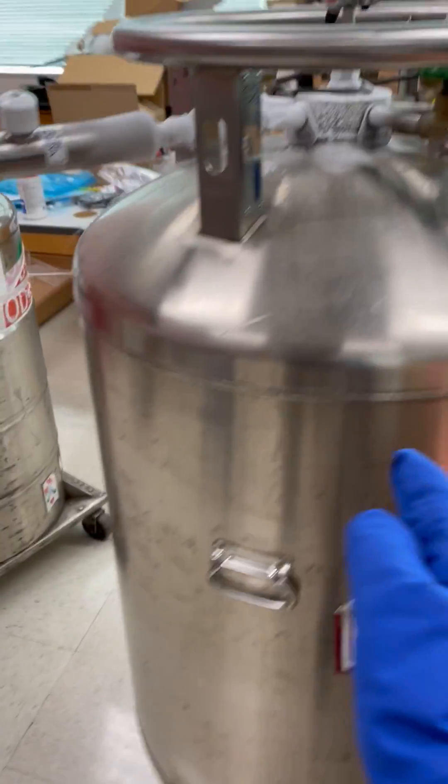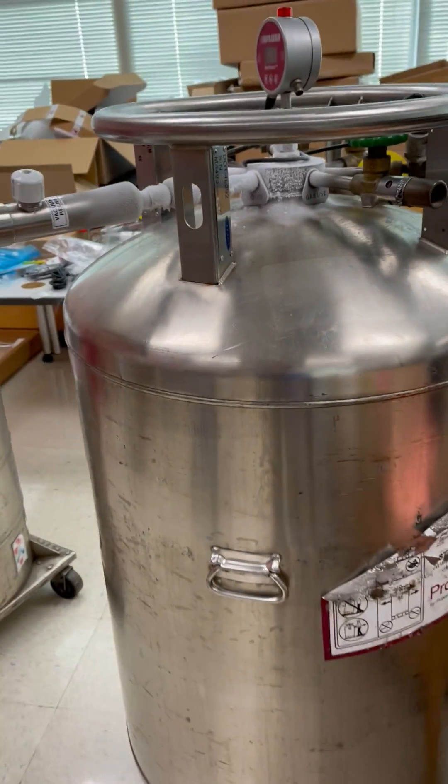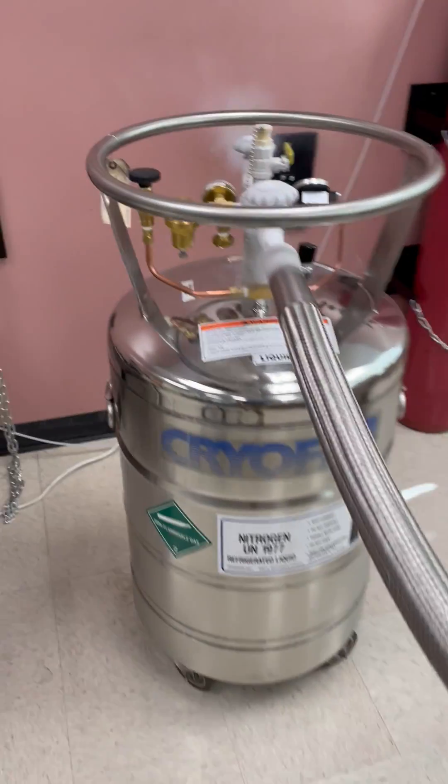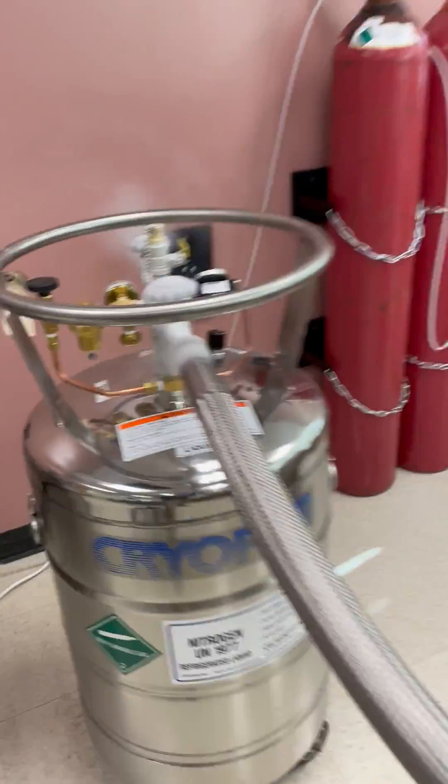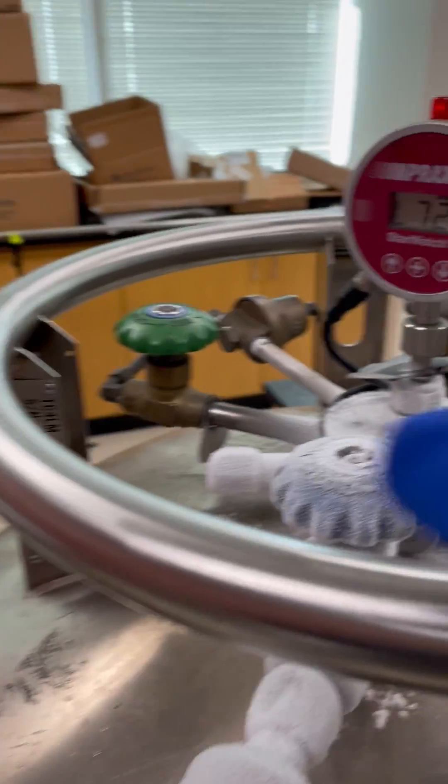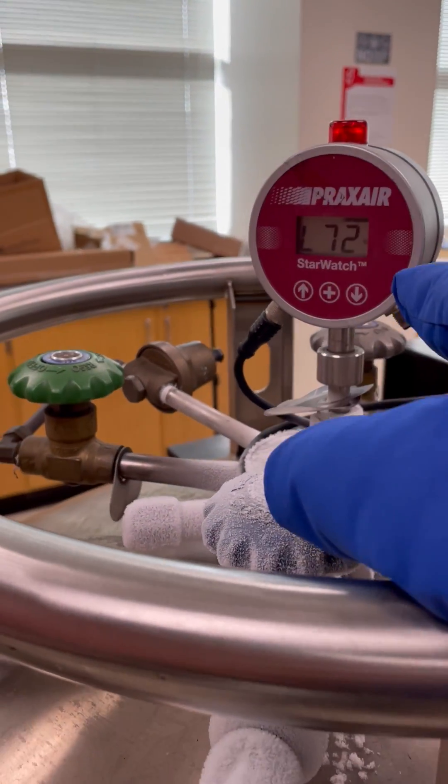This video shows you how to do the liquid nitrogen transfer from the tank, which is 240 liters, to our Dewar, which is 80 liters. So we expect that the percentage should drop from 100 to about 66. I've wasted some of them before.